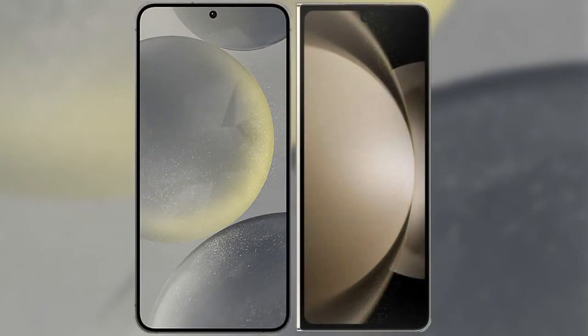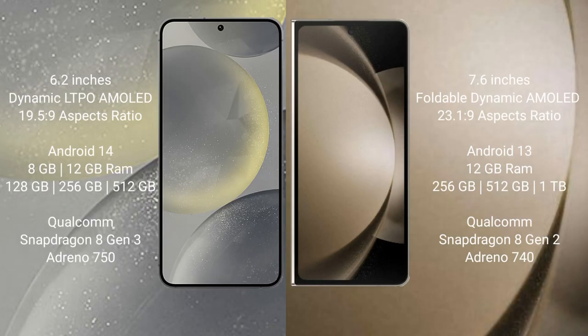I will compare the new Samsung Galaxy S24 with Samsung Galaxy Z Fold 5. Samsung S24 comes with a 6.2 inches dynamic LTPO AMOLED display. Samsung Galaxy Z Fold 5 comes with a 7.6 inches foldable dynamic AMOLED display.